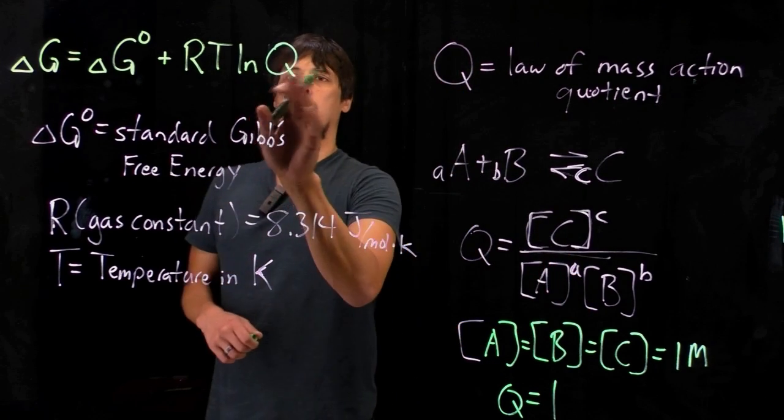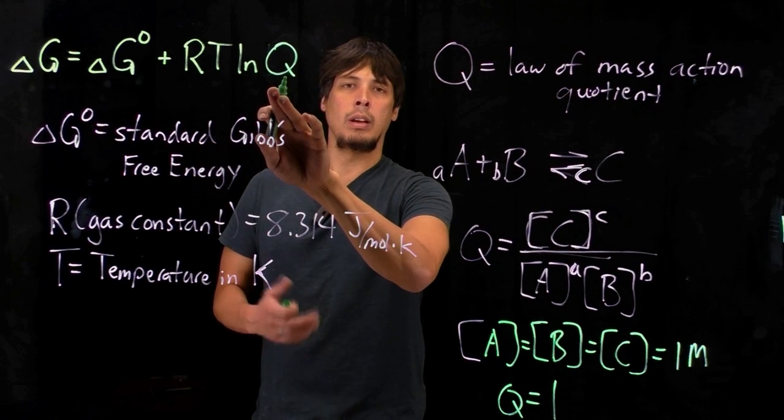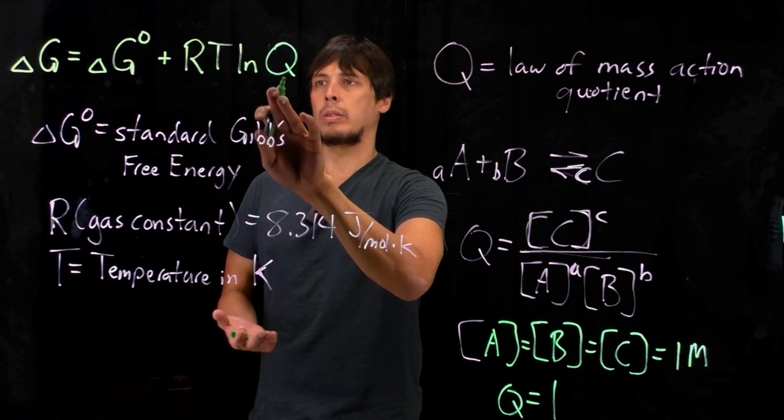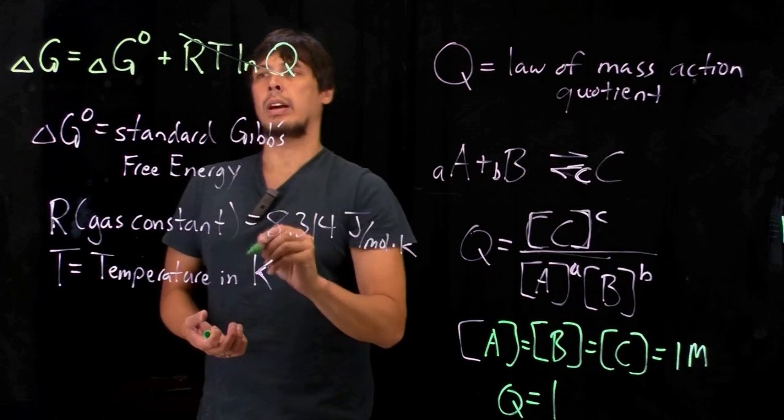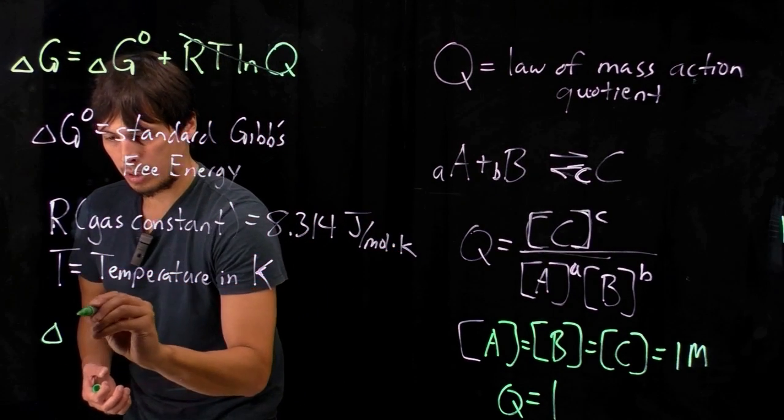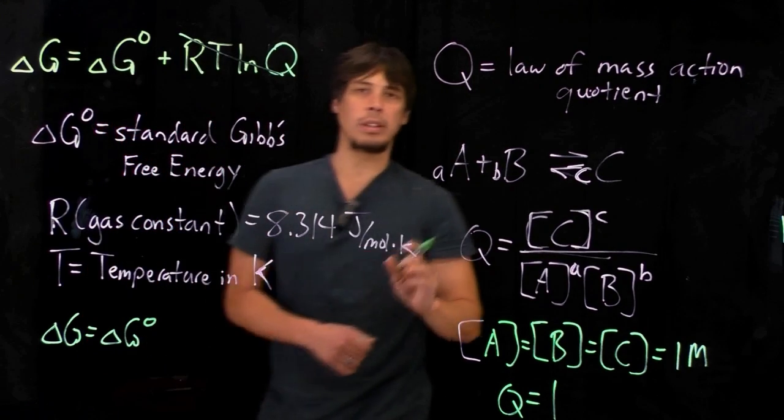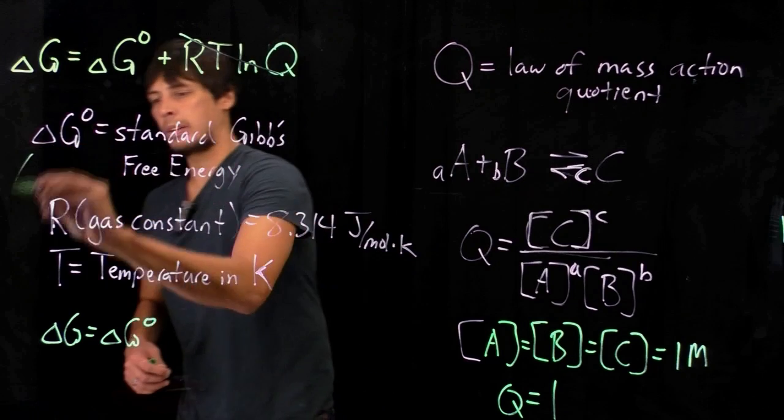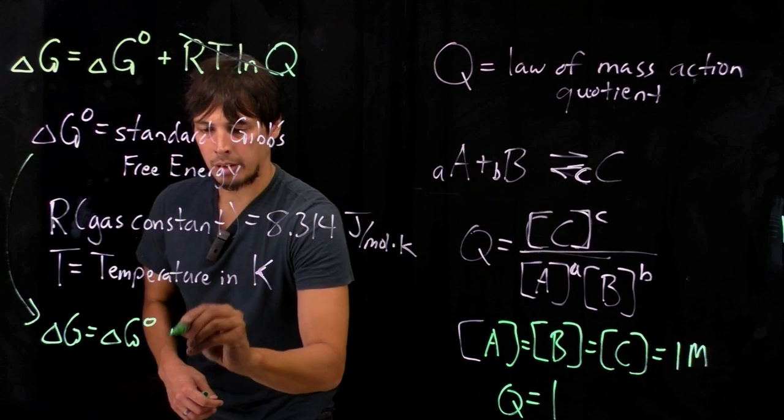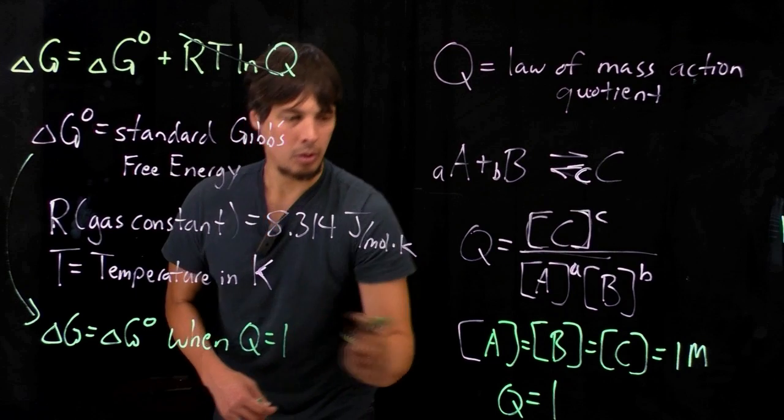And what happens is, in this term, ln of Q becomes ln of one, and the natural log of one is always zero. So this term cancels out, and delta G is equal to delta G not. So that gives us the definition of the standard Gibbs free energy. This is when Q equals one.